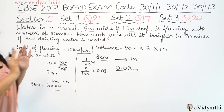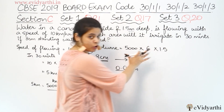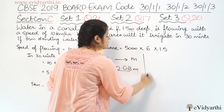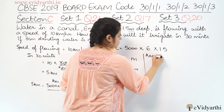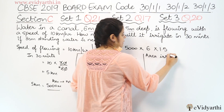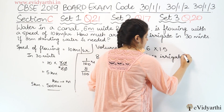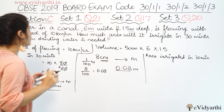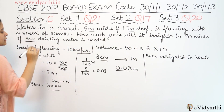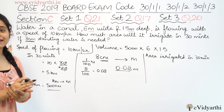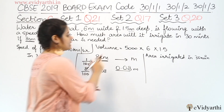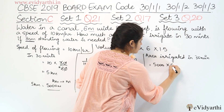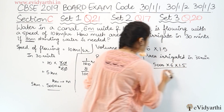Now we find the volume of water flowing through the canal in 30 minutes. The area irrigated in 30 minutes equals the volume divided by the standing water depth. So: Area = (5,000 × 6 × 1.5) ÷ 0.08.